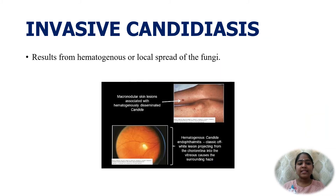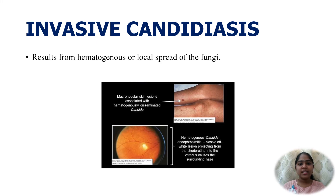Invasive candidiasis results from hematogenous or local spread of the fungi. Various forms include urinary tract infection, pulmonary candidiasis, septicemia caused by C. albicans and C. glabrata, arthritis and osteomyelitis, meningitis, ocular keratoconjunctivitis and endophthalmitis, hepatosplenic candidiasis, disseminated candidiasis, and nosocomial candidiasis caused by C. glabrata.